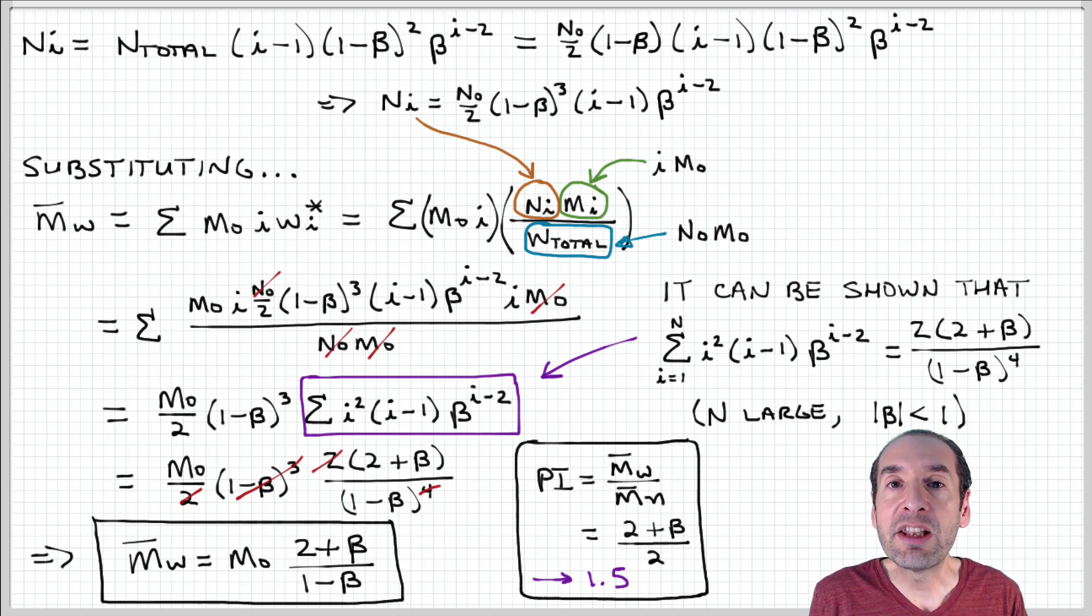So for high molecular weight polymers that would correspond to a value of beta approaching 1, or a high probability of propagation versus termination, this ratio converges to a value of 1.5. So that's interesting because remember for disproportionation termination, the polydispersity index converges to a value of 2. So combination termination gives us a less polydispersed sample than disproportionation.